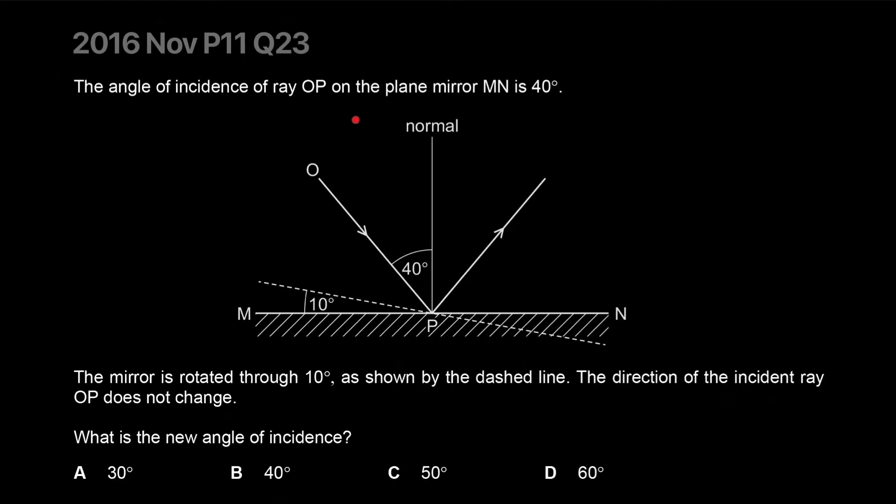The angle of incidence of a ray OP on the plane mirror MN is 40 degrees. The mirror is rotated through 10 degrees as shown in the diagram. The mirror is tilted clockwise. The direction of the incident ray OP does not change - the ray is the same, but someone knocks the mirror. What is the new angle of incidence?